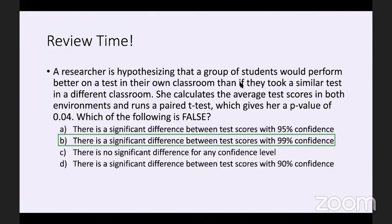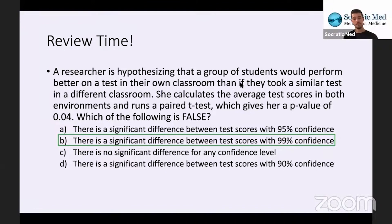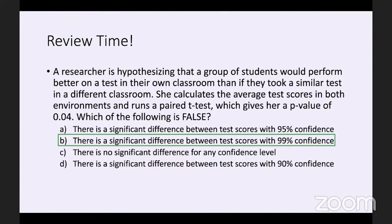A student raises a question: when first reading the question, they thought both B and C were false and couldn't choose an answer. They understand why B is false because 0.04 is greater than 0.01. But for C, it says there's no significant difference for any confidence level — yet there's clearly a significant difference at the 95% and 90% confidence levels. Wouldn't C also be false?